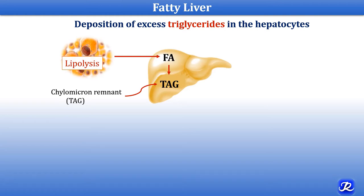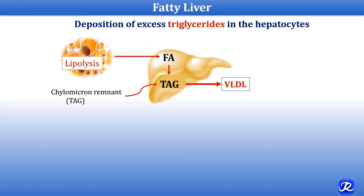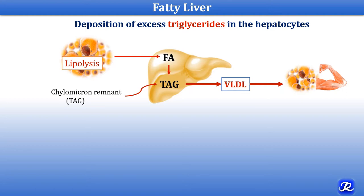In fasting, starvation, and diabetes mellitus, fatty acids are derived from lipolysis — that is, the breakdown of triacylglycerol into fatty acids and glycerol — and these fatty acids are transported to the liver. In fasting and starvation the liver can utilize fatty acids for energy. Triacylglycerols in the liver are secreted as VLDL and transported to peripheral tissues like adipose tissue and muscle. In adipose tissue, triacylglycerol in VLDL is broken down into fatty acids and glycerol by lipoprotein lipase, with fatty acids taken up for storage or energy.